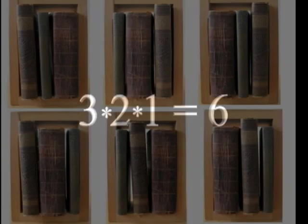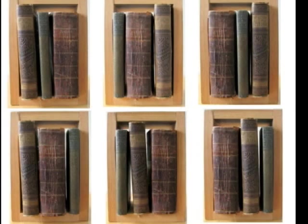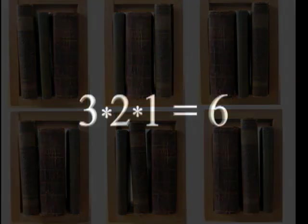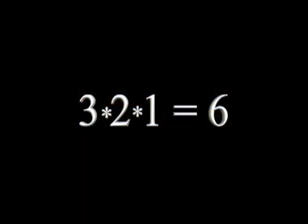Three times two times one gives us six possible arrangements — this number agrees with our original investigation. Mathematicians have a special notation for this technique. Three times two times one is called three factorial. The notation looks like this: the exclamation mark tells us we are multiplying three times two times one, with the integers decreasing by one.